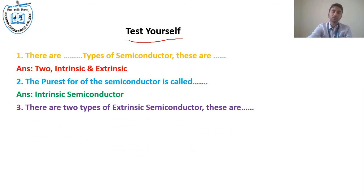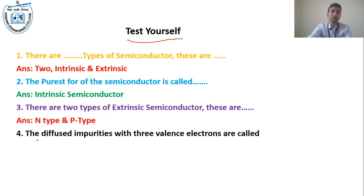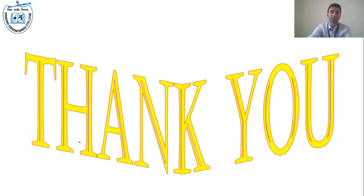The third question: there are two types of extrinsic semiconductors, n-type and p-type. Fourth question: impurities with three valence electrons are called trivalent impurities, also named as acceptor atoms.